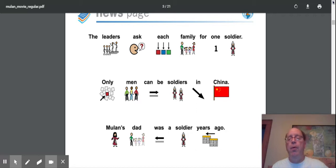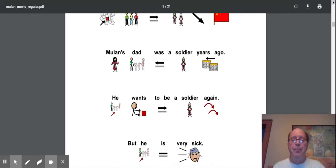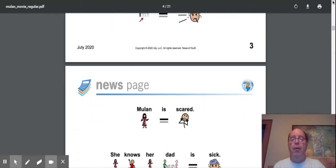Now in the United States right now, women and men can both be soldiers. But in China and during this movie, only the men. So it looks like her dad is going to have to go. He wants to be a soldier again, but he is very sick. Oh, now there's a dilemma. The family needs to provide a soldier, but only the men can be the soldiers. What are they going to do?